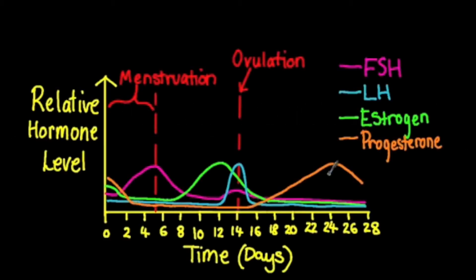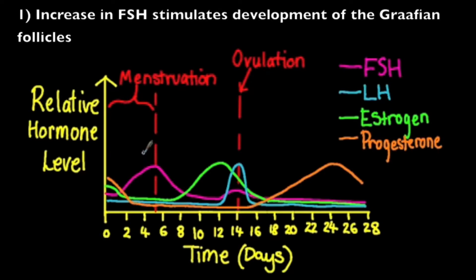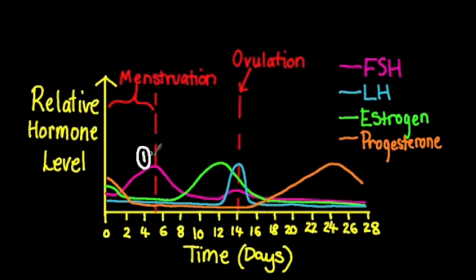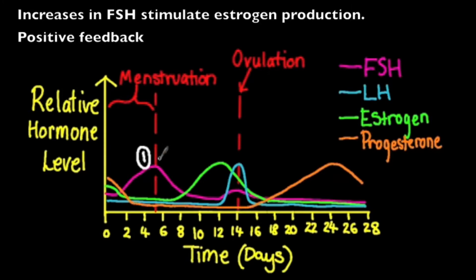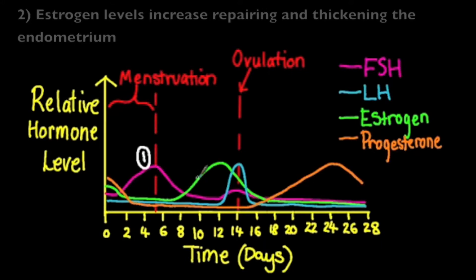Since we are dealing with a cycle, we'll start our explanations with follicle stimulating hormone, FSH. FSH levels are represented by the pink line. An increase in FSH levels will stimulate the development of the Graafian follicles in the ovary. It will also stimulate estrogen production, and this is an example of positive feedback.